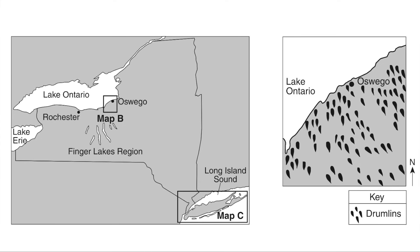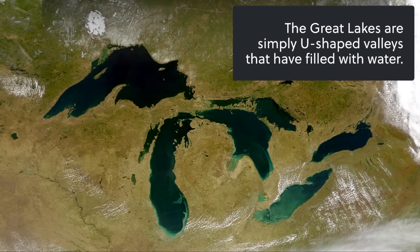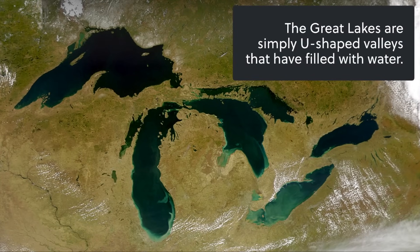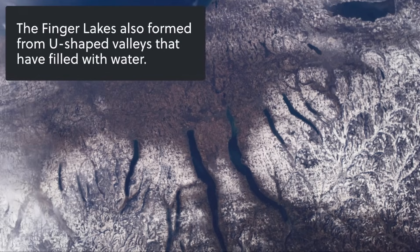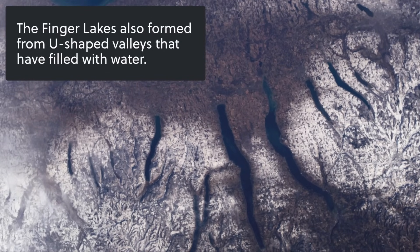We can see lots of features in New York State that formed as a result of glaciation, including large fields of drumlins near Oswego, right off of Lake Ontario. Additionally, we see the Great Lakes, which were actually just large U-shaped valleys that became dammed by sediment and then filled with water — very similar to the Finger Lakes of upstate New York. All the result of glaciers.